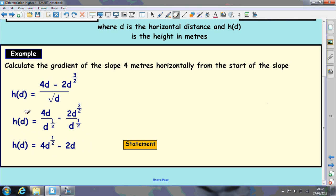We have not differentiated yet. We've just changed the form of it into a form where we can differentiate. So h'(d), multiply the half down, reduce it by 1. So that goes to -1/2. And then that's going to be subtract 2.